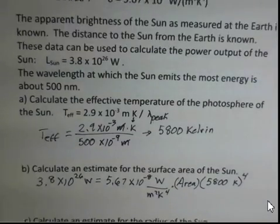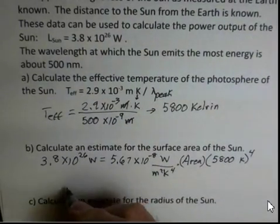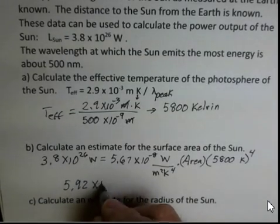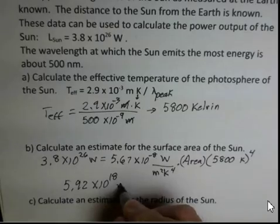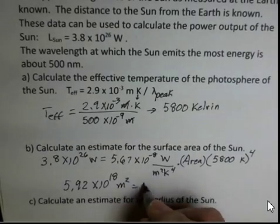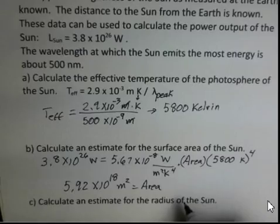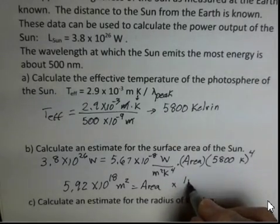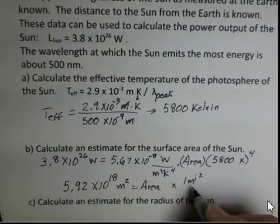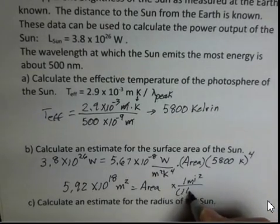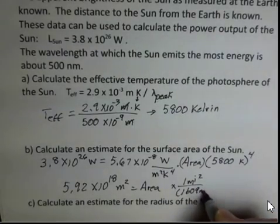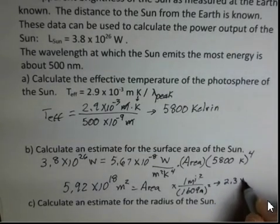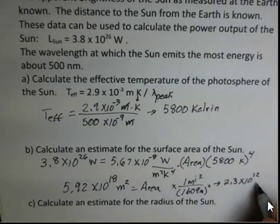And doing so, I should check my number here, but I came up with 5.92 times 10 to the 18th square meters as the area. And just for fun, I can convert that to square miles. So 1 mile squared is 1.609 meters squared. And I came up with 2.3 times 10 to the 12th square miles.